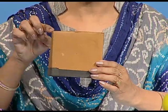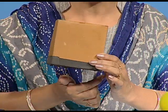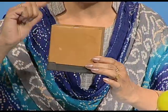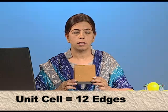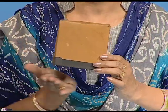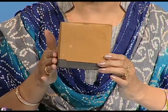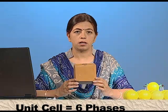Let's count the edges: there are 12 edges in a unit cell. And there are 6 faces in a unit cell. We must know all this to understand the variety of unit cells.